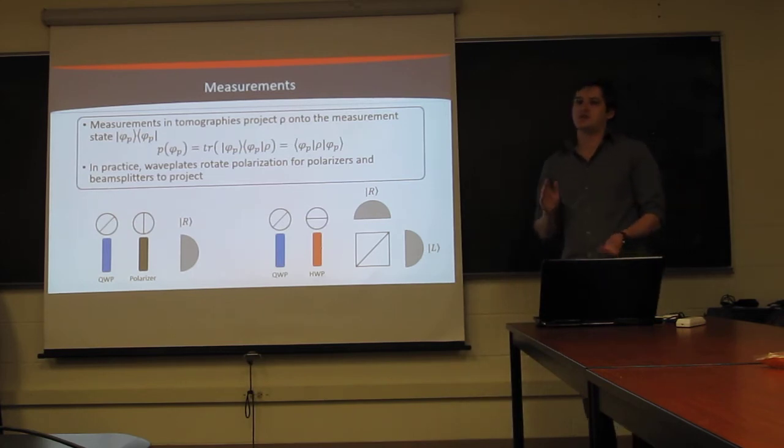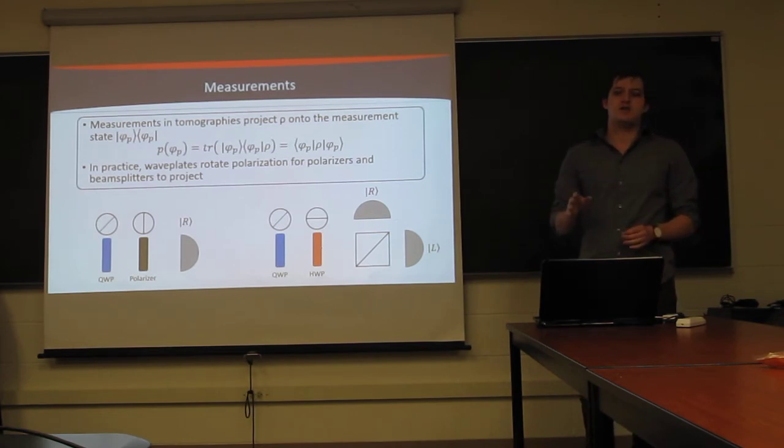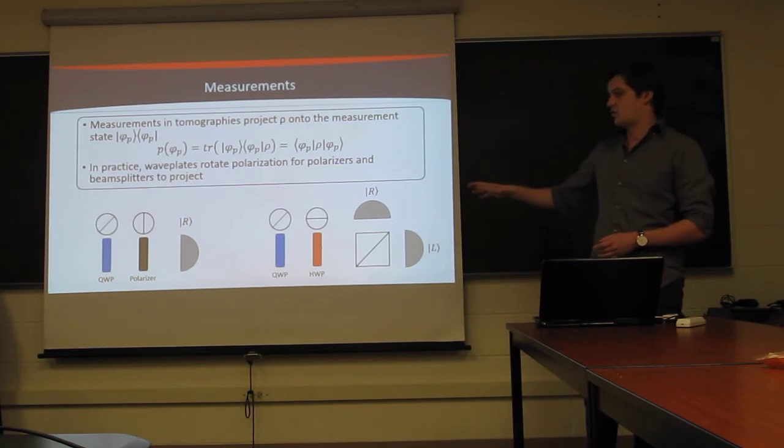And, with this methodology, we can project onto essentially any state on the Poincare Sphere we want, so long as we have ideal wave plates and polarizers. A little bit later, we'll talk about how you can deal with non-ideal projectors, but, for now, we're going to assume that you can hit all of these H, V, D, A, L, and R.